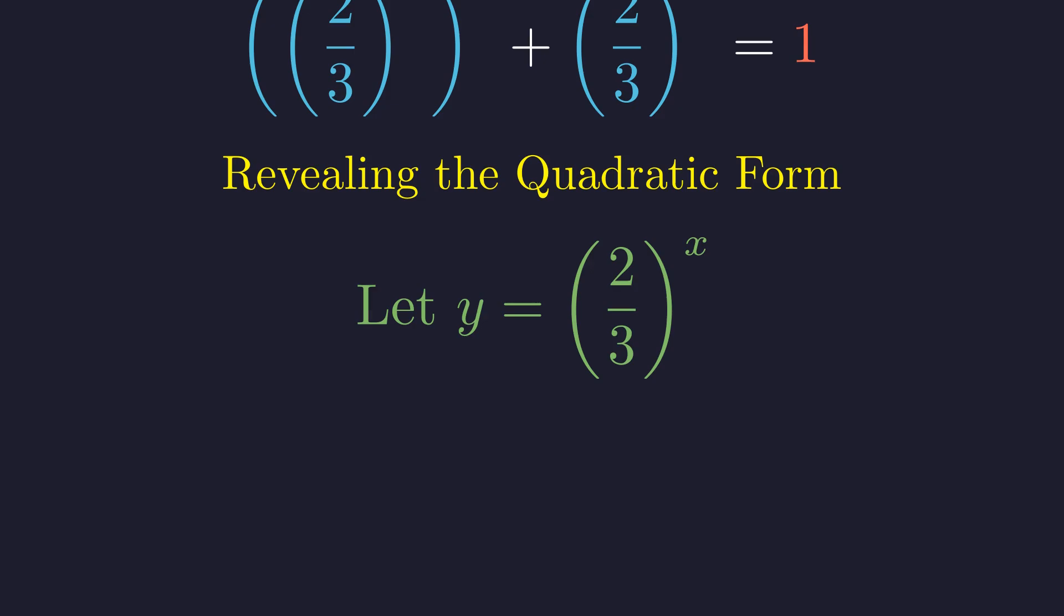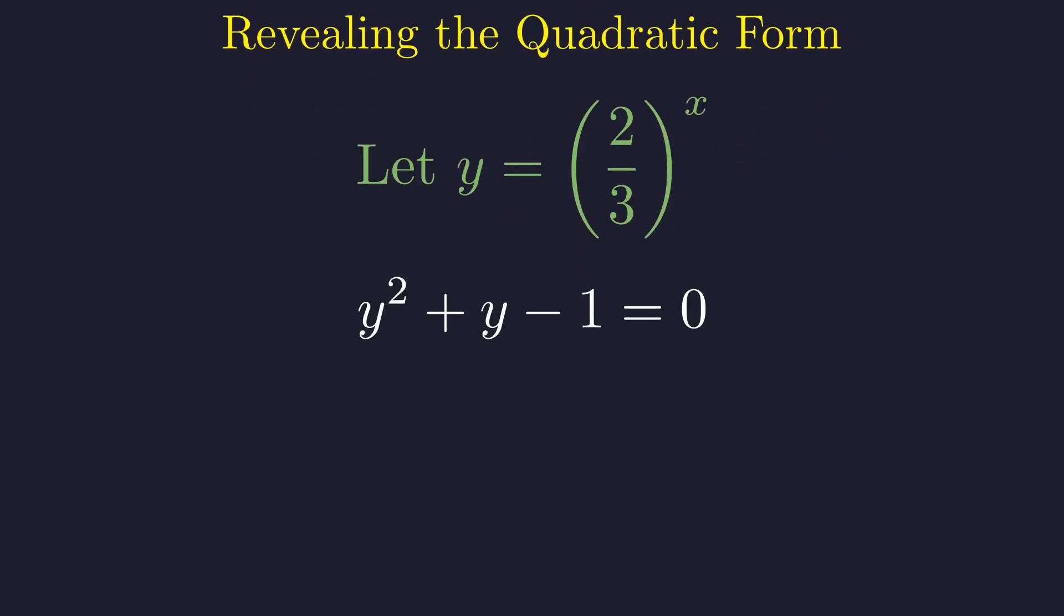When we substitute y into our equation, our complex exponential equation transforms into a remarkably simple quadratic equation in standard form: y squared plus y minus 1 equals 0, where a is 1, b is 1, and c is negative 1. Let's examine this quadratic equation.